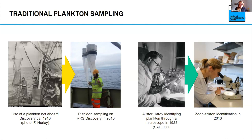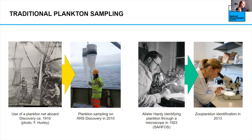Typically we look at these critters in the lab using microscopes — effectively the same as 100 years ago, which on one hand is a good thing. But it also means that to deploy one of these nets, we need a ship and a person to do that. And it's a tiny sample — maybe a few cubic metres in one of those nets — and then we kind of extrapolate that to the entire ocean. It's a bit tricky.